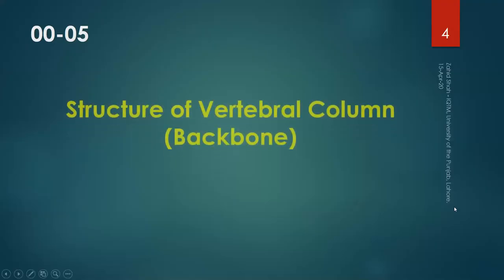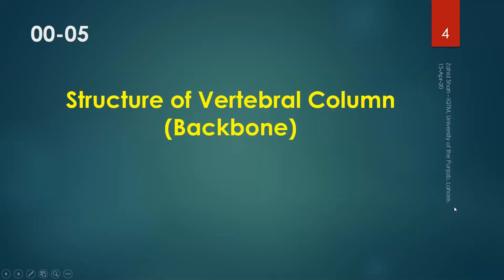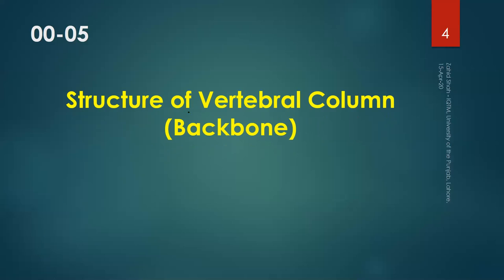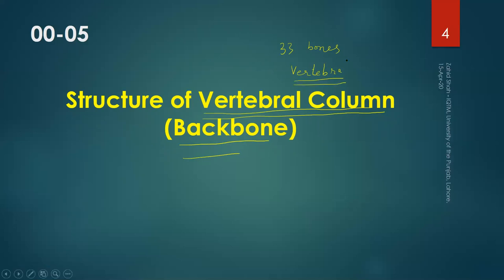Assalamu alaikum and welcome back. We will continue our discussion on the types of bones. As we saw toward the end of the last segment, our backbone, also called the vertebral column, is an example of irregular bones and it actually consists of 33 bones. Each bone is called a vertebra, so a vertebra is an example of irregular bones. In this segment, you will see the structure of the vertebral column in detail.